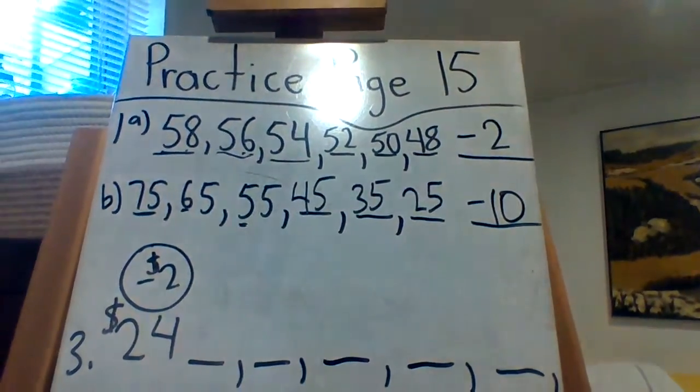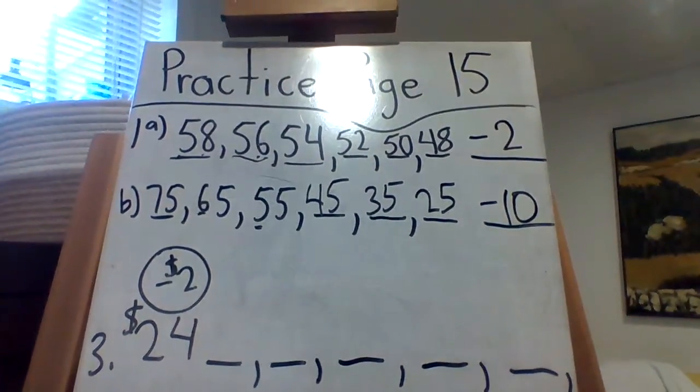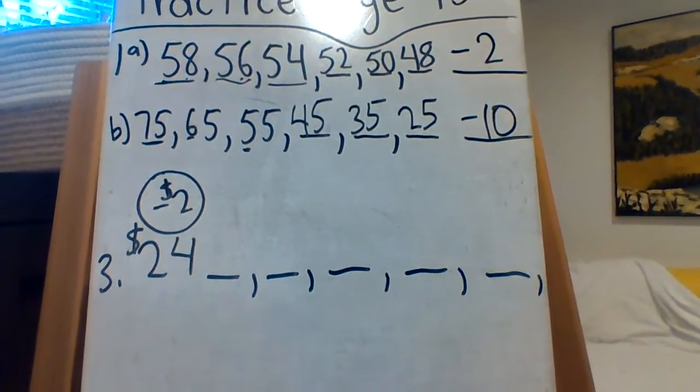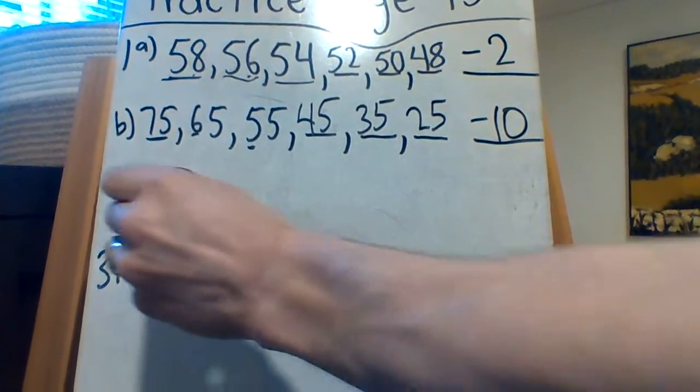Now 2, I'm going to let you do by yourself. You can use the 100 chart. I'm sure you can figure that one out. Now 3, on the other hand, I'm going to give you a little hand. It says Kazuo had $24. Check. Dollars. Check.